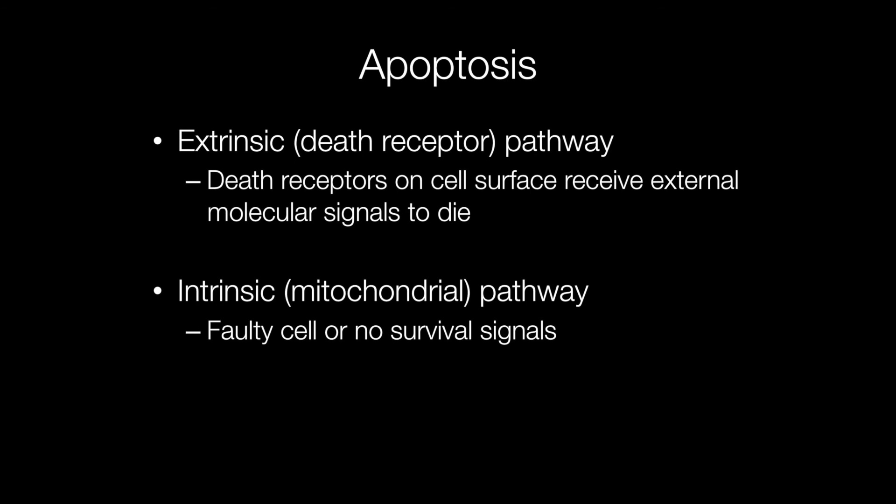The mechanism of apoptosis is quite complex. There are two main pathways. The first is the extrinsic or death receptor pathway, where special receptors on the cell surface called death receptors are activated by external molecular signals that tell the cell to die. The intrinsic or mitochondrial pathway occurs in cells that are faulty or when there are no survival signals.